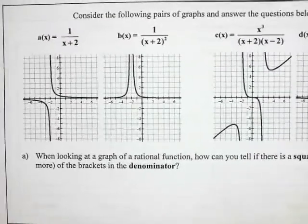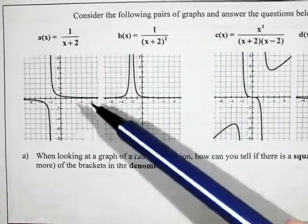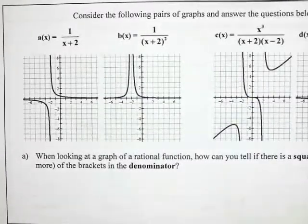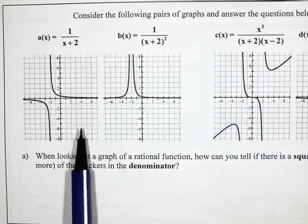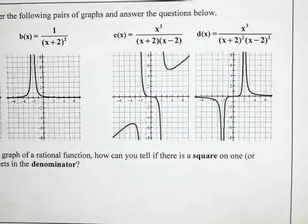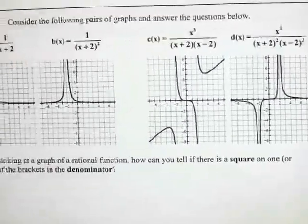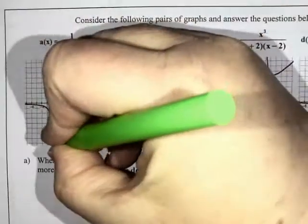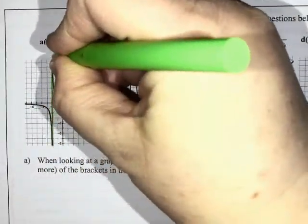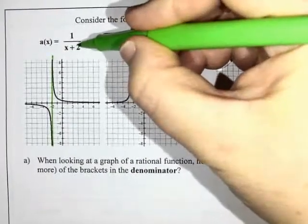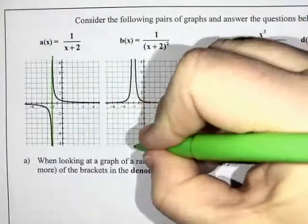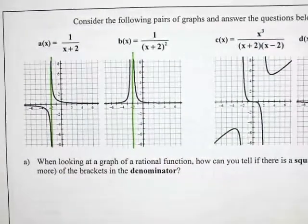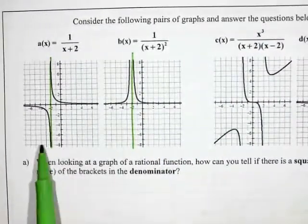So I guess what I'm really trying to figure out is what's the difference between not having a square and having the square. Well if I look at this one and then I look at this one, the denominator is where the asymptote is. So the asymptote in this one was at negative 2 which makes sense because negative 2 plus 2 is 0. And then this one here is also at negative 2.